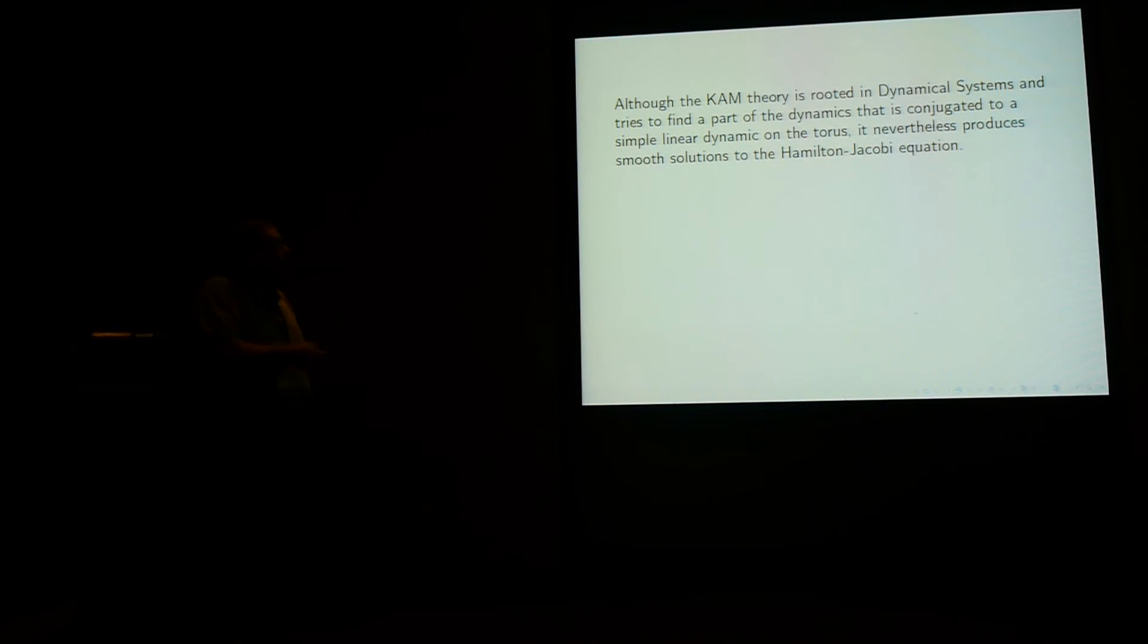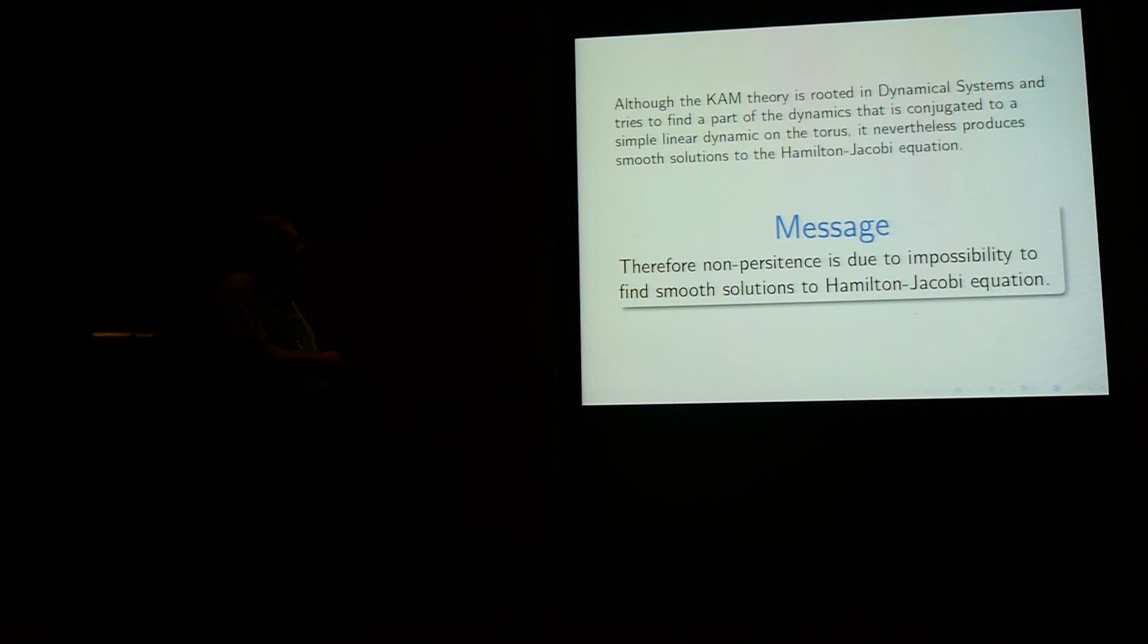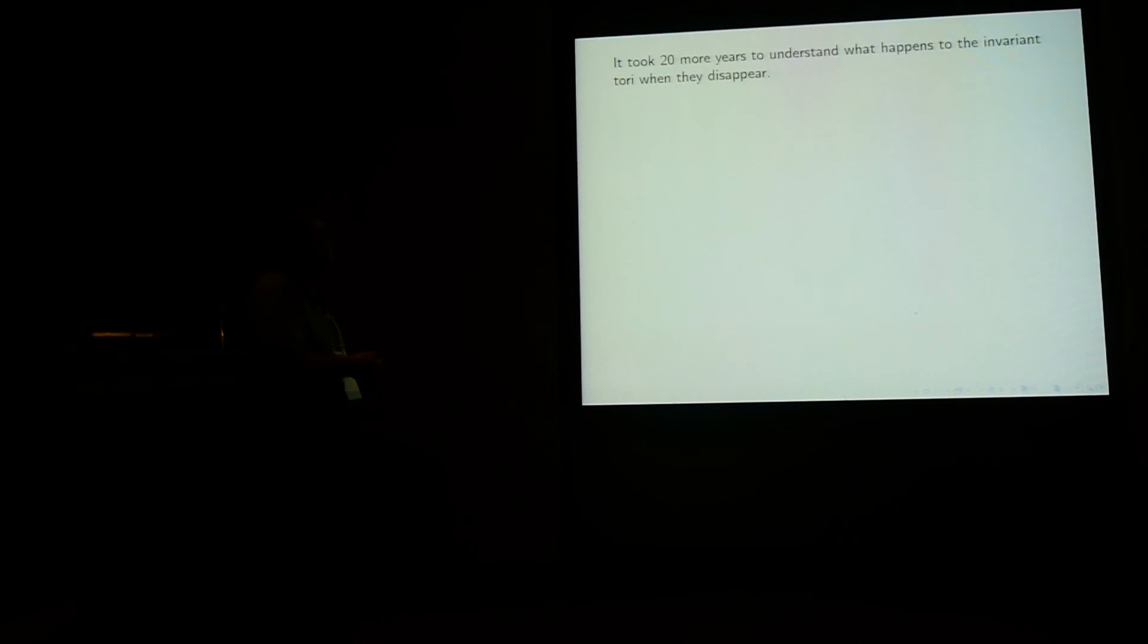In fact, if you only know, there is a very nice argument due to Michel Hermann, which says that if this is irrational, and you know that this is a graph, then necessarily it will have to be Lagrangian. So the graph is invariant by the dual flow, and by the Hamilton-Jacobi theorem, the function Uᵥᵥ₀ solves the equation. So KAM is rooted in dynamical system, and it tries to mimic the dynamics, the linear dynamics on the torus. In fact, it also produces smooth solution to the Hamilton-Jacobi theorem. So here comes the important message of this lecture. Non-persistence is due to the impossibility to find smooth solution to Hamilton-Jacobi theorem.